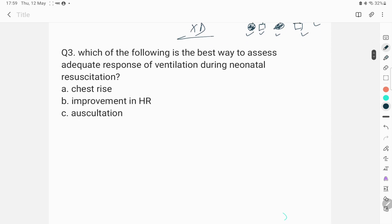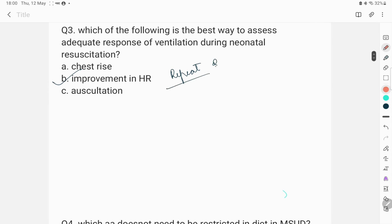Another question was, which of the following is the best way to assess the adequate response of ventilation during neonatal resuscitation? The options were chest rise, improvement in heart rate and auscultation. The clear-cut answer to this question is improvement in heart rate. It is again a repeat question. It is clearly given in NRP that the most important indicator of successful positive pressure ventilation is rising heart rate.